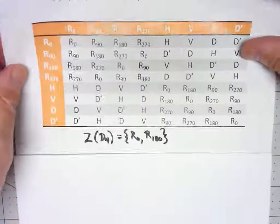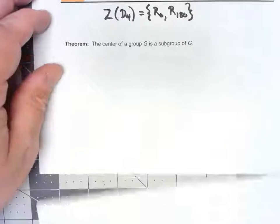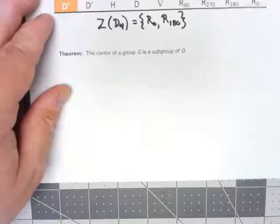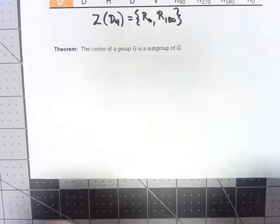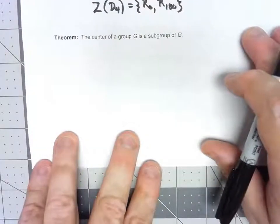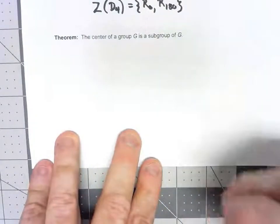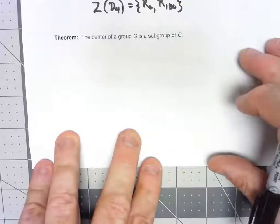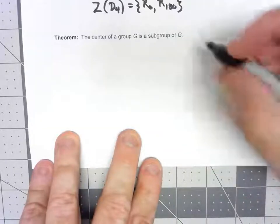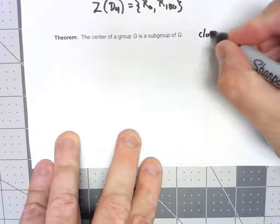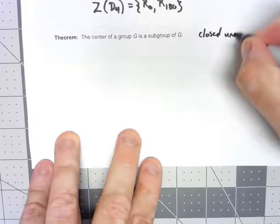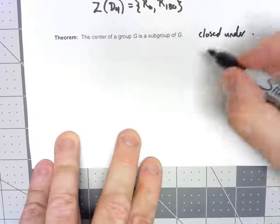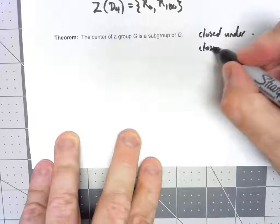Because this whole chapter is on subgroups, it shouldn't be a surprise that the center of the group is always a subgroup of G. We can prove that by, once again, using the two-step subgroup test. I need to check that it's closed under the operation and it's closed under inverses.